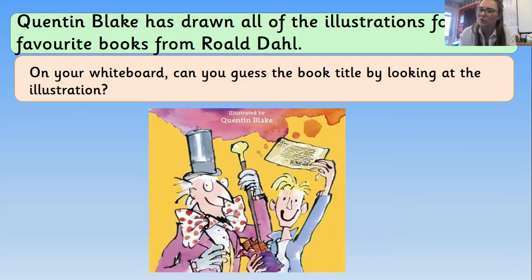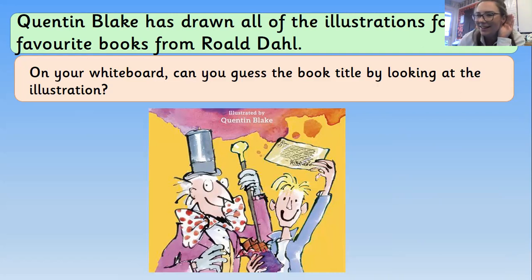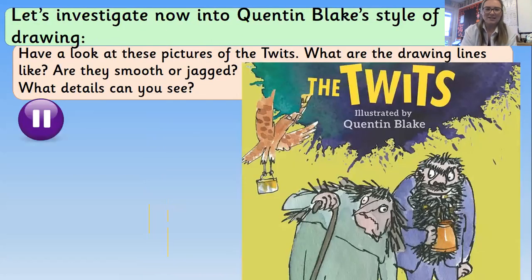I bet all of you have done this one before. There are two main characters here — one of them seems to be waving something golden, and he seems to be eating some chocolate. Of course it's Charlie and the Chocolate Factory — one of my favourites!